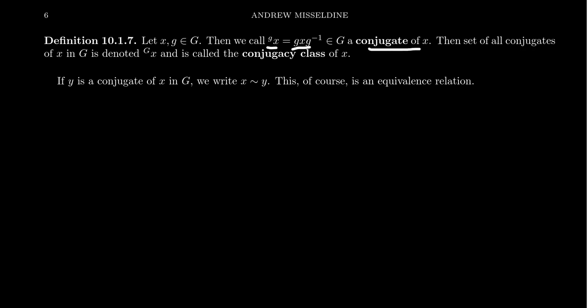Nonetheless, this element superscript g x is defined to be g x g-inverse. This is called the conjugate of x with respect to g — and honestly this is what one calls a left conjugate. If we take the set of all conjugates of x inside of G, this is denoted as capital G sub x, and this is called the conjugacy class of x.